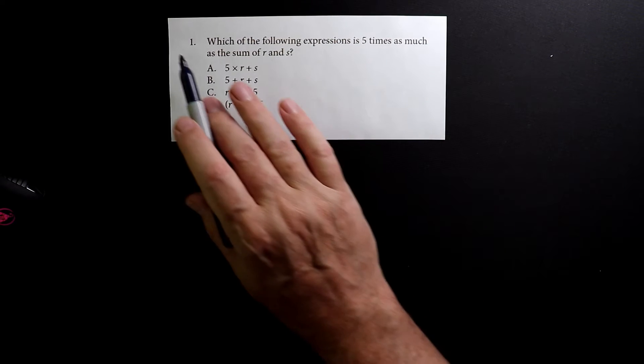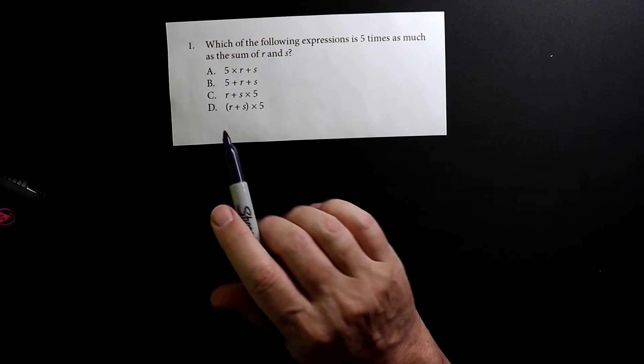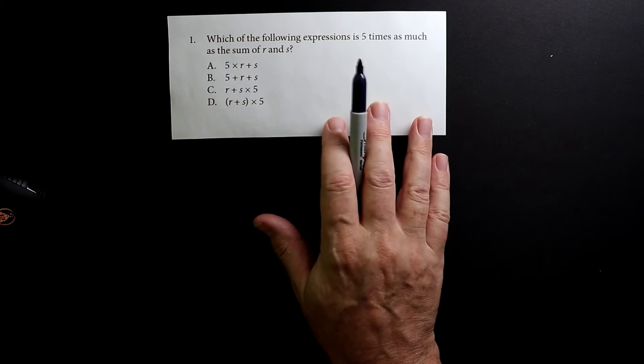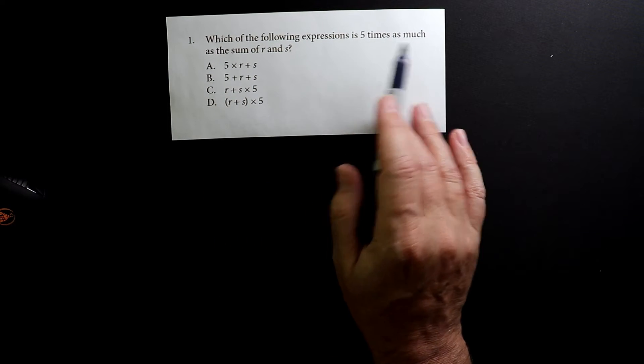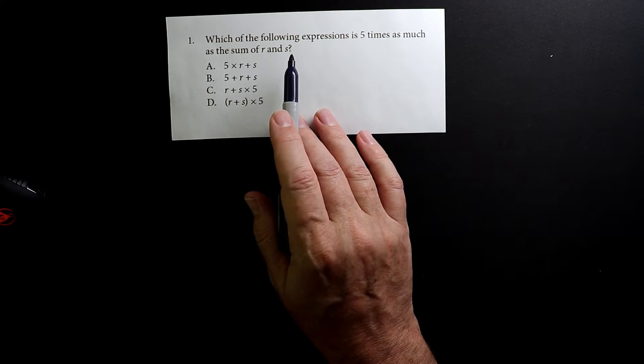This is the first problem on the second test for the Accuplacer. Which of the following expressions is five times as much as the sum of r and s?